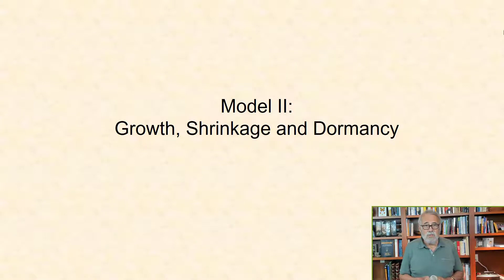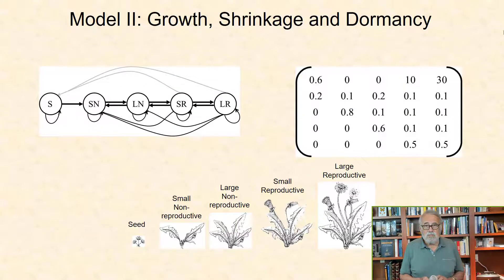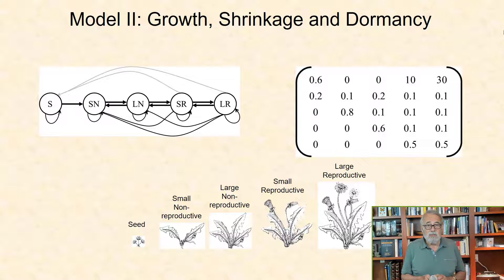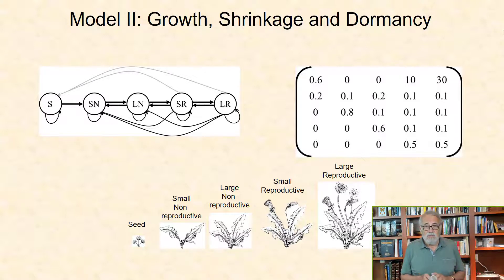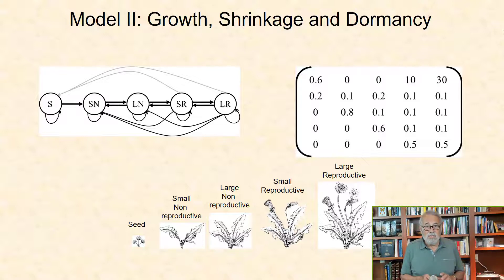Model 2: Growth, Shrinkage, and Dormancy. Modular organisms such as plants can shrink in size, and this may impact their survival or reproduction. Dormancy, a period in an organism's life cycle when growth, development, or physical activity are temporarily stopped, can also influence demography because a population will consist of two parts: the growing individuals that can reproduce, and the dormant individuals that can persist for many, and in rare cases hundreds of years. Here we will consider plant seed dormancy and note that the number of seeds in the seed bank is a function of the seed rain, the fraction that germinate each year, and the fraction of seeds that decay and never germinate.